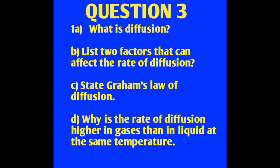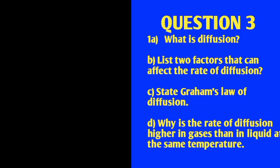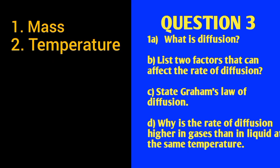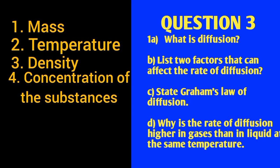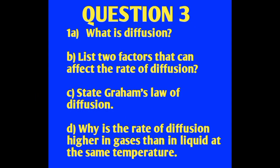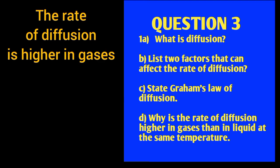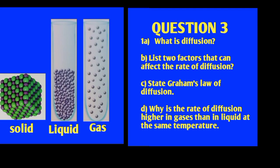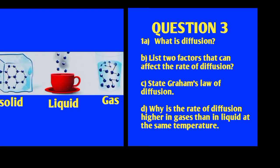Factors that can affect the rate of diffusion are: temperature, density, concentration of the substance, and pressure. The rate of diffusion is higher in gases than in liquids at the same temperature because the molecular motion in gases is faster, the intermolecular forces in gases are less than in liquids, and the density of gases is less than the density of liquids.